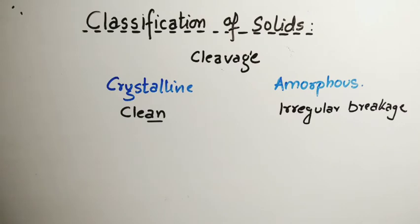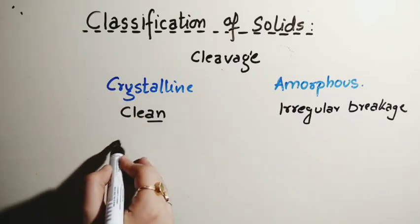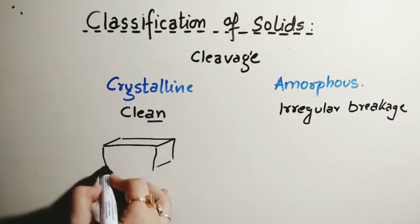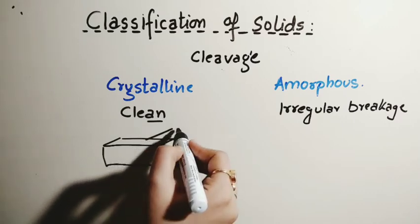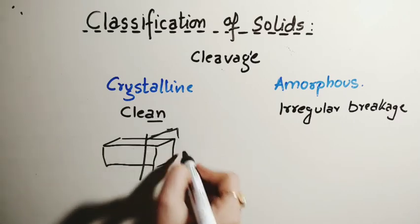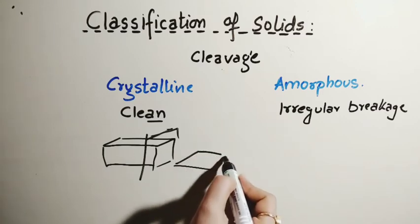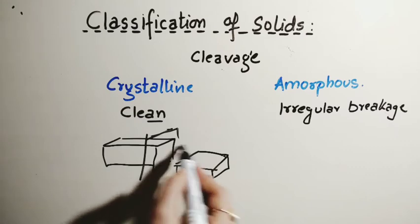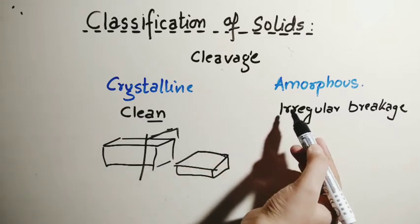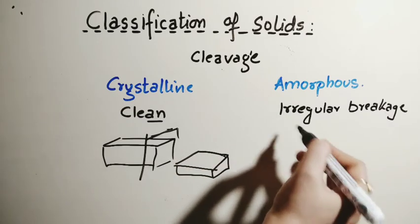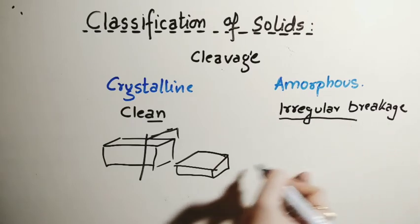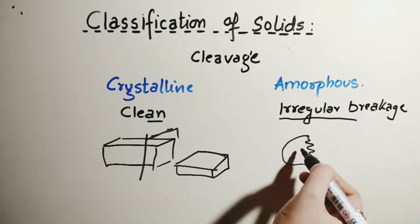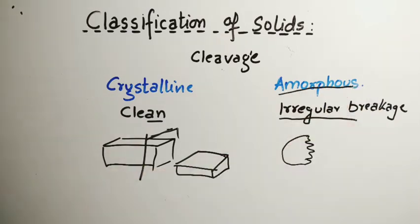The next property is the cleavage property. In the case of crystalline solids, it is just like a cubic structure — if we cut it with a knife, we get a clean cleavage, meaning there is no irregularity in the shape, it is a complete clean cut. Whereas in the case of amorphous solids, when we cut them, there is an irregular breakage — not a clean surface but an irregular surface — which means it is an amorphous solid.